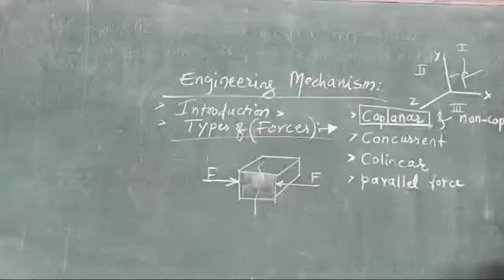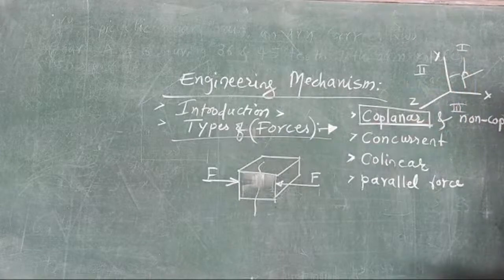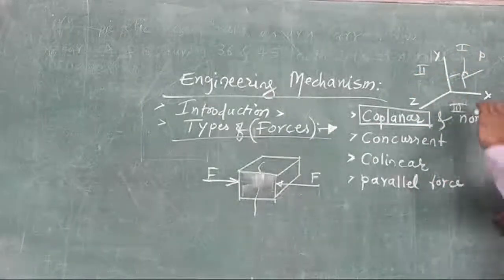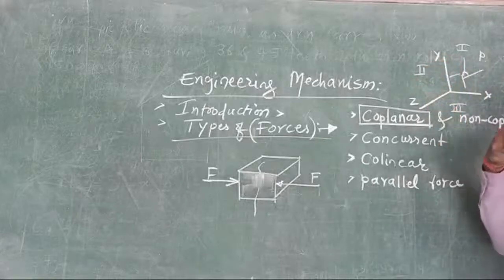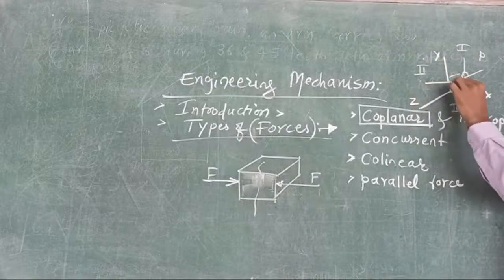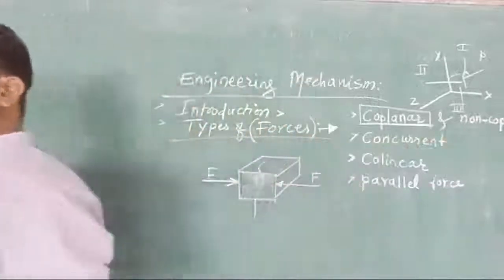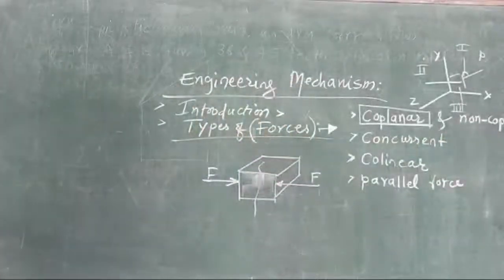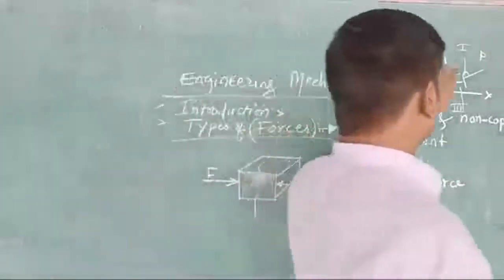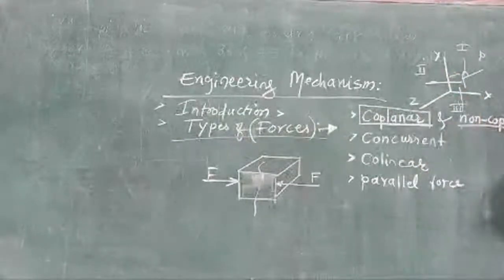Non-coplanar: all the forces are at different planes. These are the planes — plane 1, plane 2, plane 3. So where forces are acting at different planes, there is one force from the second plane and one force from the third plane. So the number of forces acting from different planes — that we call as non-coplanar. Different planes, we call as non-coplanar.